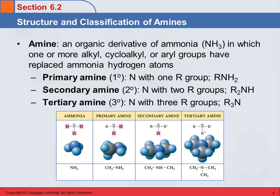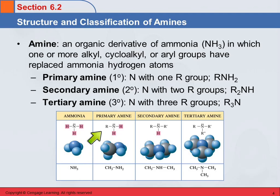Remember, an aryl group is an aromatic group. We classify amines in somewhat the same way as alcohols, with the words primary, secondary, and tertiary. That has to do with how many R groups are on the nitrogen. A primary amine has one R group, a secondary amine has two, and a tertiary amine has three.